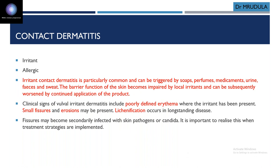Contact dermatitis can be either irritant or allergic dermatitis. Irritant dermatitis is very common — triggered by soaps, perfumes, medicines, urine, or faeces. The barrier function of the skin becomes impaired by these irritants. Lesions are poorly defined, erythematous. Small fissures and erosions can occur, and lichenification in long-standing cases. Fissures may be secondarily infected with candida or other organisms, so when giving treatment, check for secondary infections.